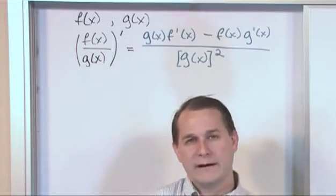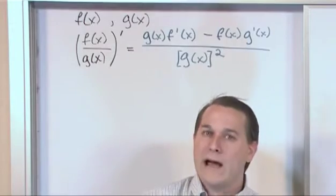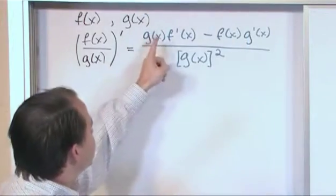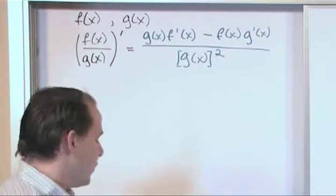So again, you need to memorize it because it will make your life really easy. You may have your own ways of memorizing it. The way I do it is bottom times the derivative of the top minus the top times the derivative of the bottom over the bottom squared.